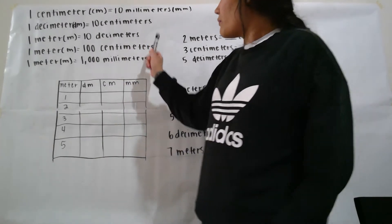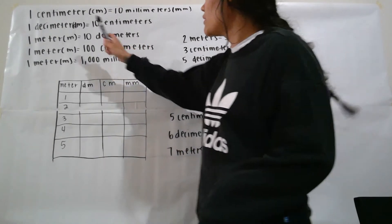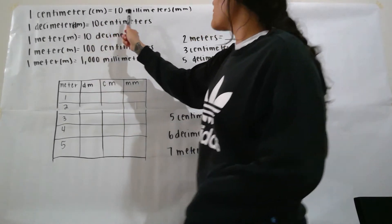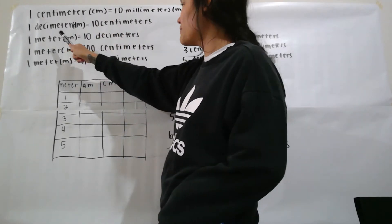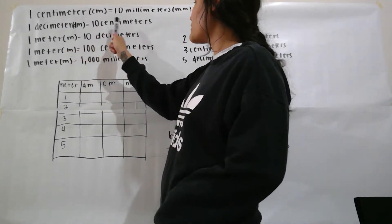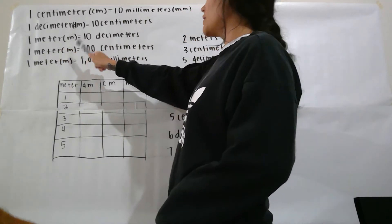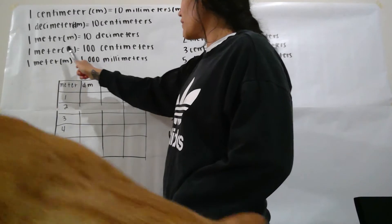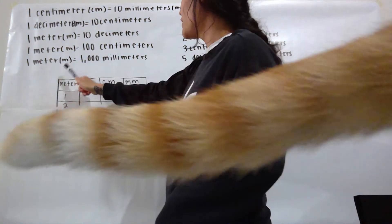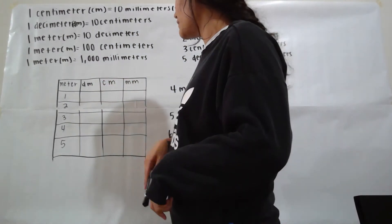So make sure to write this down: one centimeter equals 10 millimeters, one decimeter equals 10 centimeters, one meter equals 10 decimeters, one meter equals 100 centimeters, and one meter equals 1000 millimeters.